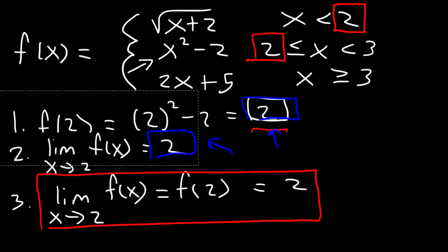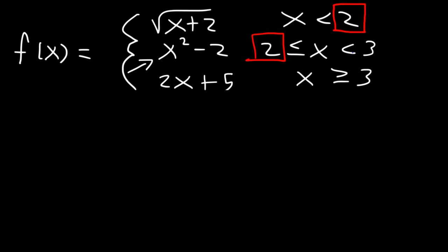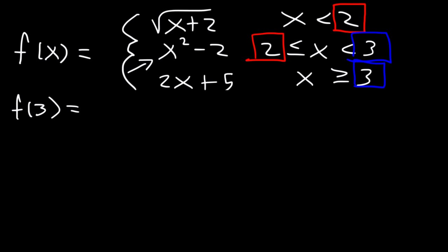Now let's move on to x equals 3. We need to use the second and third parts of the function. First, determine if it's defined at 3: f of 3 uses the third piece since x equals 3. That's 2 times 3 plus 5 — 2 times 3 is 6, and 6 plus 5 is 11. So f of 3 equals 11.